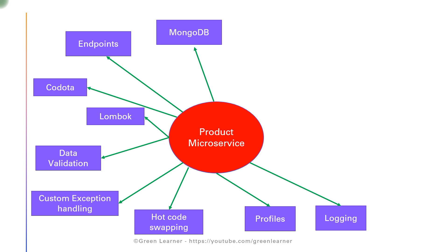Then we did logging, which is a very important part for debugging when our application is in production. We set up one centralized logging that saved us from putting log statements at every controller and service level. We got all the requests and responses from one place using filters.